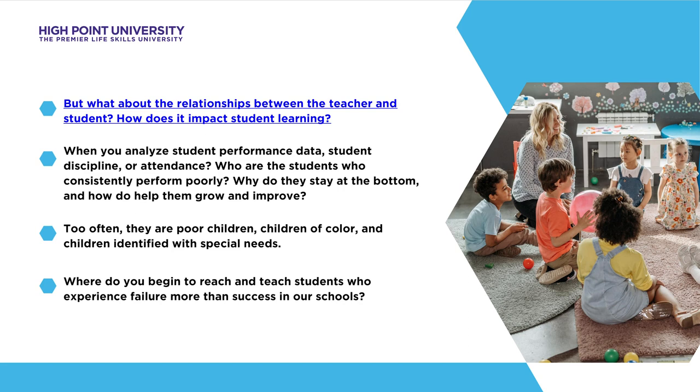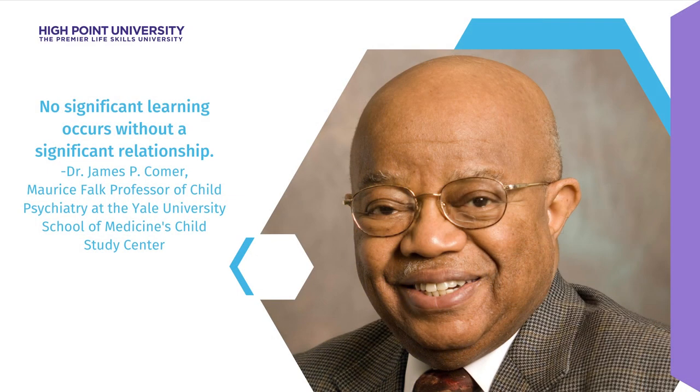Too often, they are poor children, children of color, and children identified with special needs. Where do you begin to reach and teach students who experience failure more than success in our schools? James Comer, a professor of child psychiatry at Yale University and the creator of the Comer School Development Model, states, 'No significant learning occurs without a significant relationship.' So how do we help students who constantly struggle, fail to learn, give up, lose hope, or eventually drop out? I'm convinced we start with establishing relationships for learning.